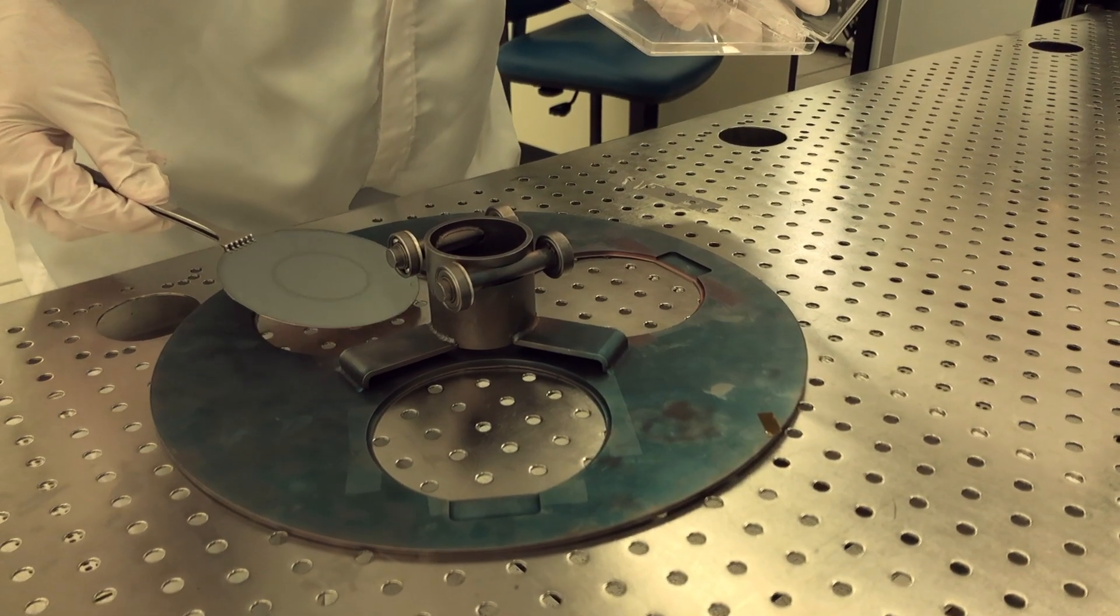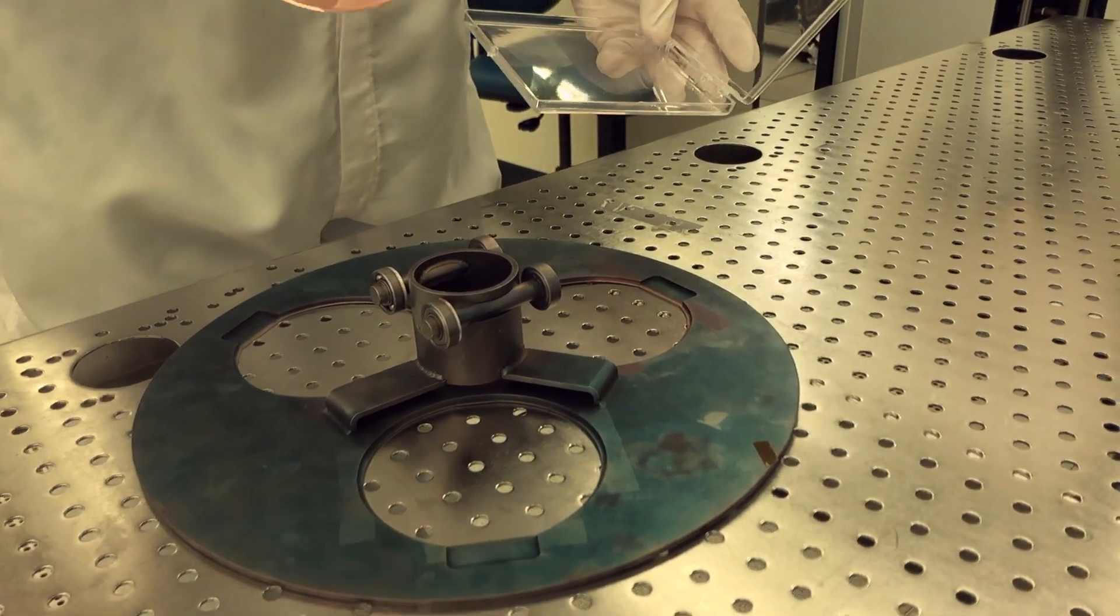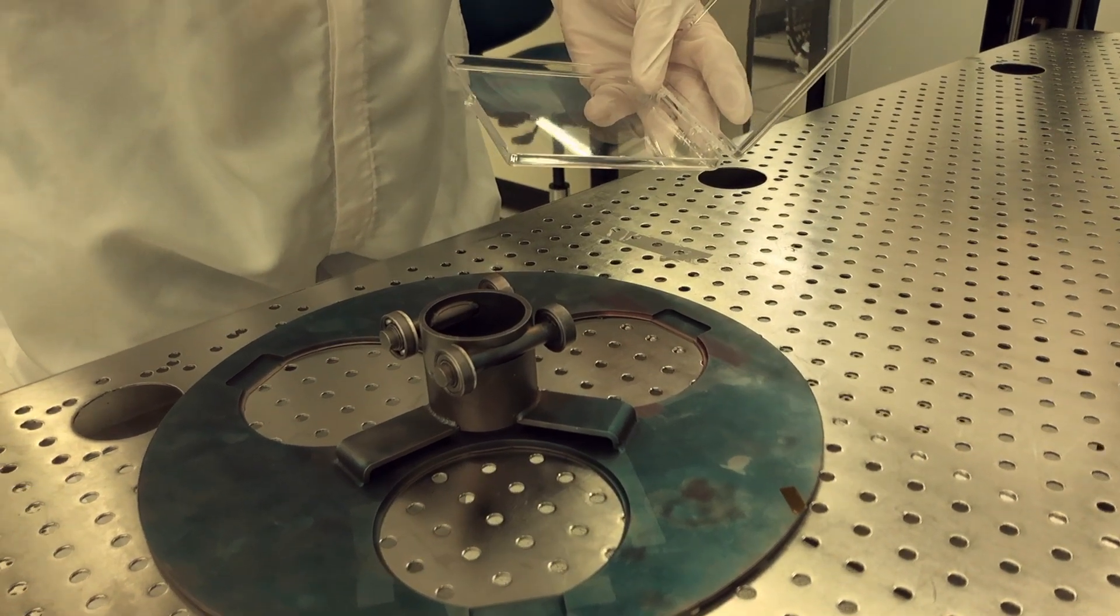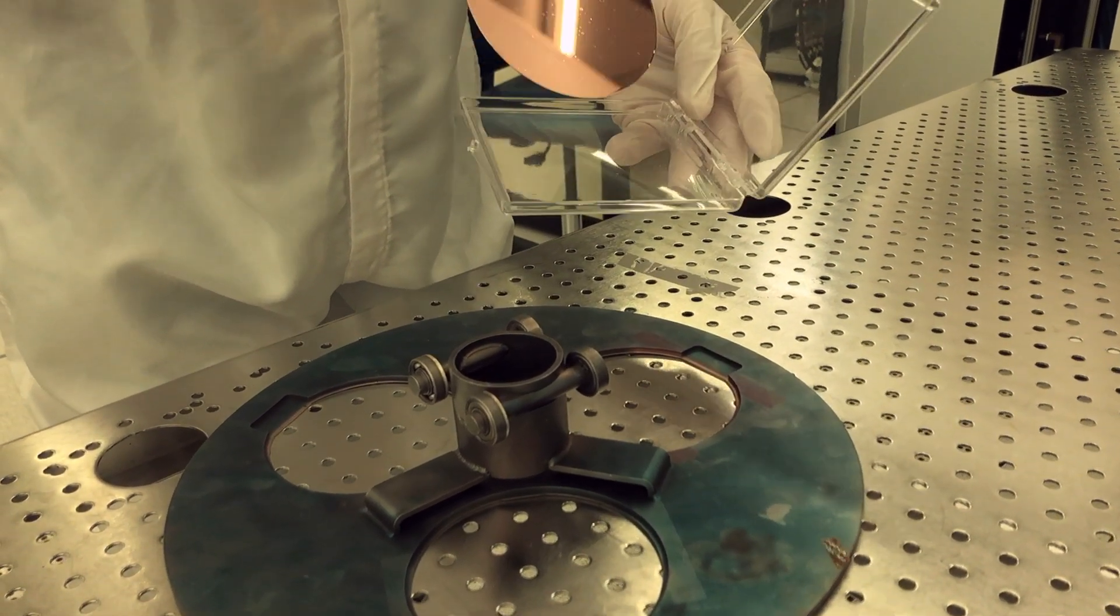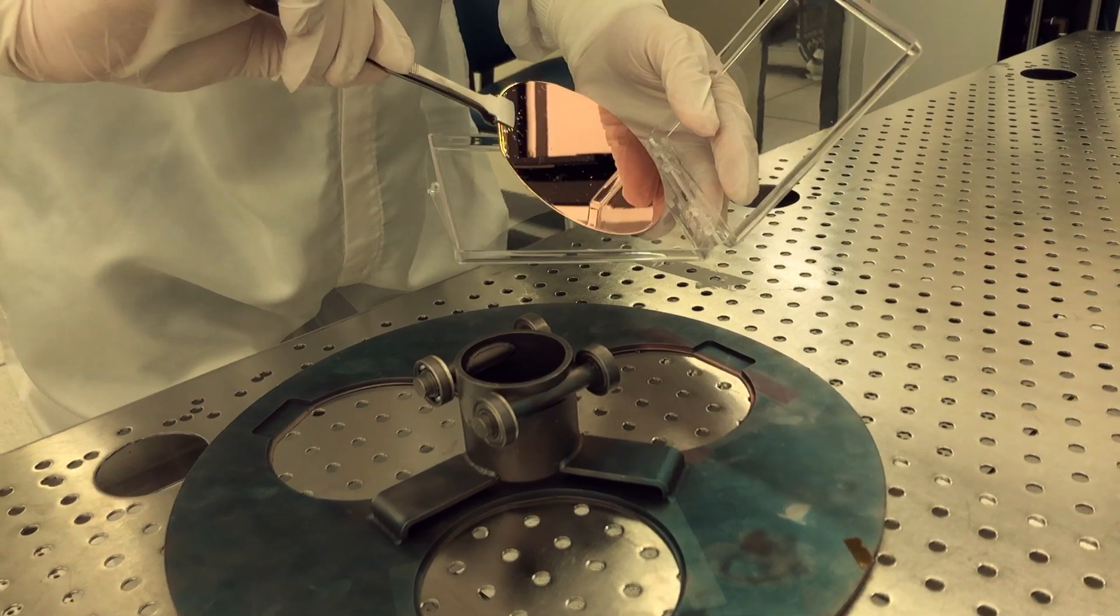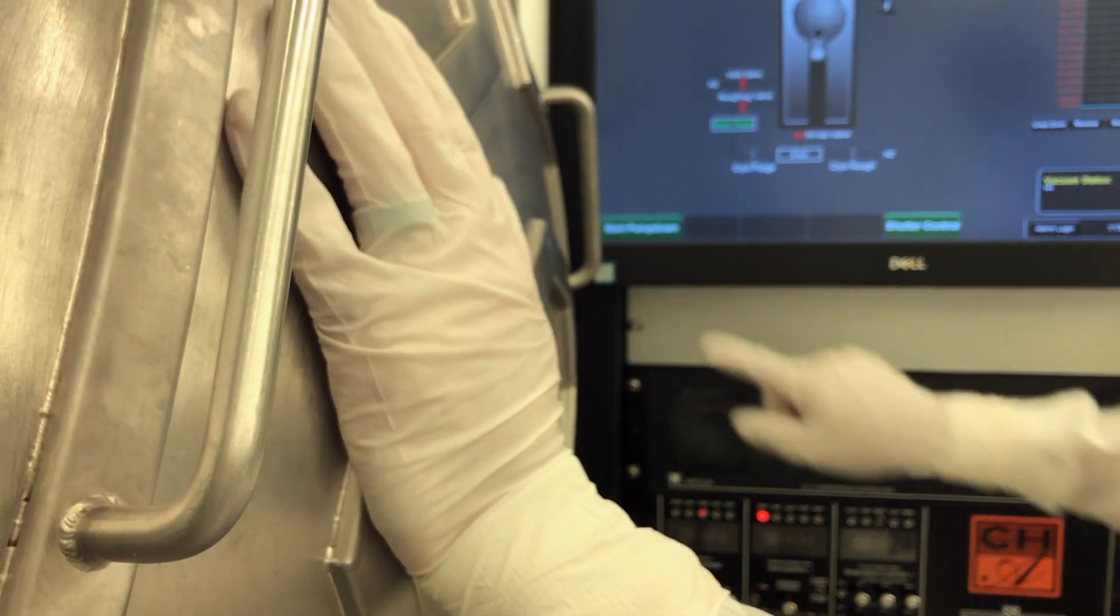Unlike sputtered films, evaporators only coat the surface facing away from the substrate. Electron beam evaporators will provide very little coating to the sides of any features that are perpendicular to the surface of the substrate.